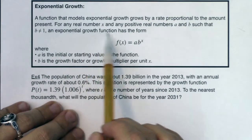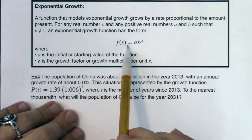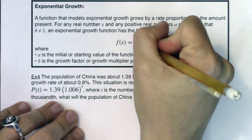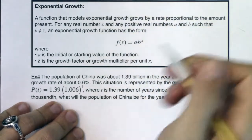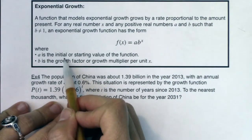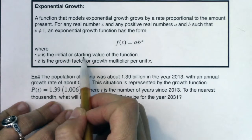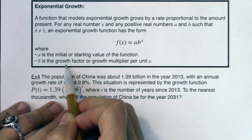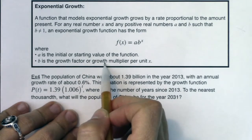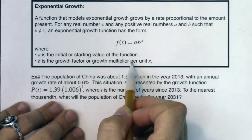But an exponential growth function has the form f of x equaling a, and there's a secret dot here, a times b to the x where a is our initial or starting value of the function and b is your growth factor or you might say growth multiplier per unit x.